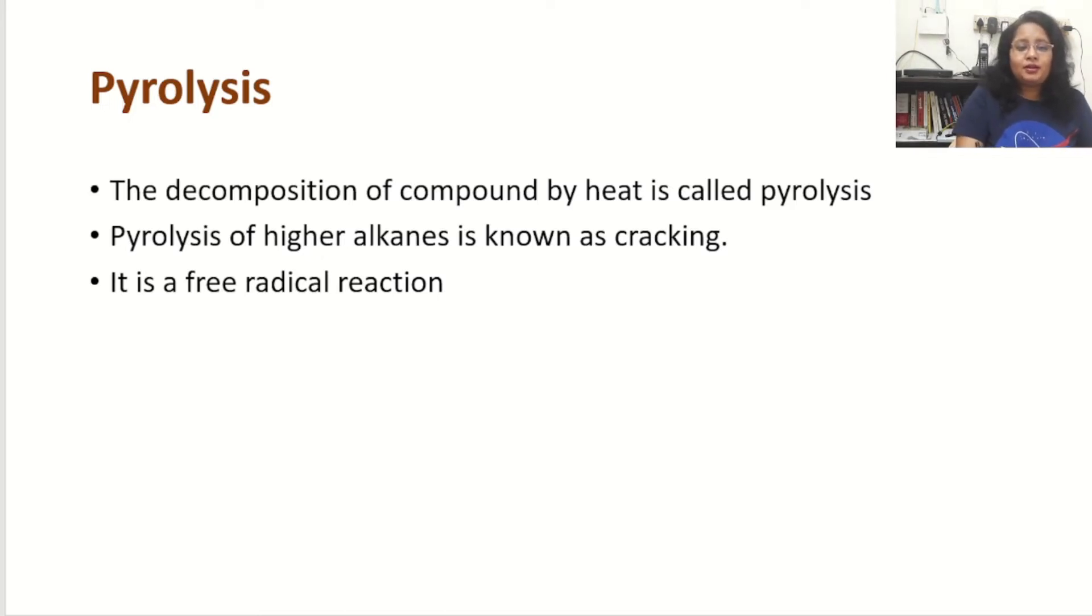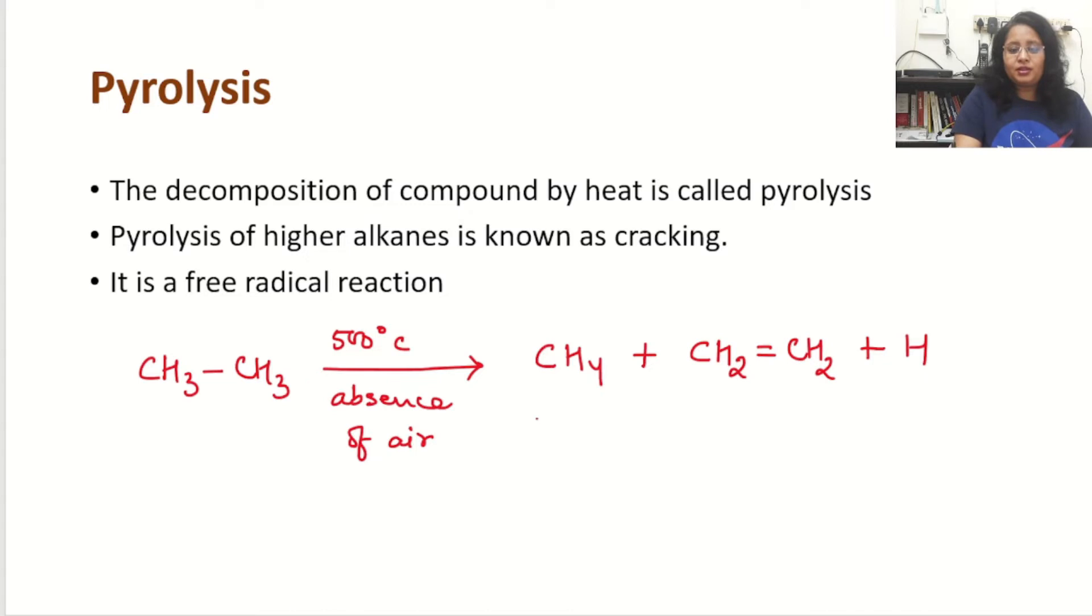Let's have an example. If ethane is heated at very high temperature, almost 500 degrees centigrade in the absence of air, what will happen? It will be broken down to alkane, alkene and hydrogen. The alkane formed is CH4, the alkene formed is ethylene CH2 double bond CH2 plus hydrogen. This is methane, ethylene and hydrogen.